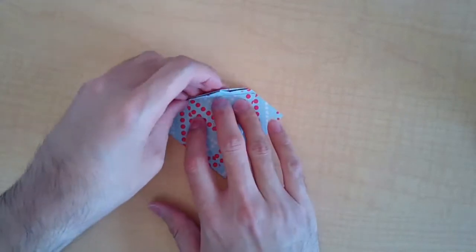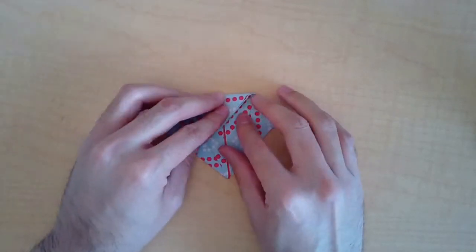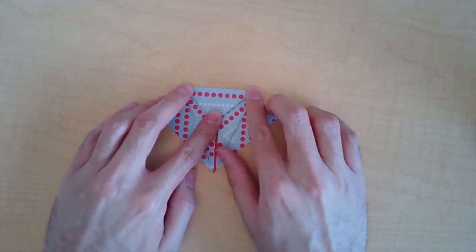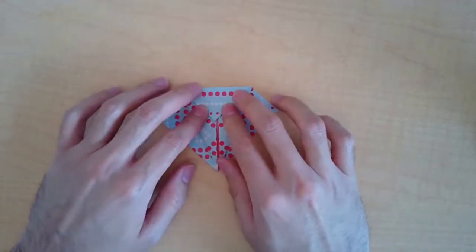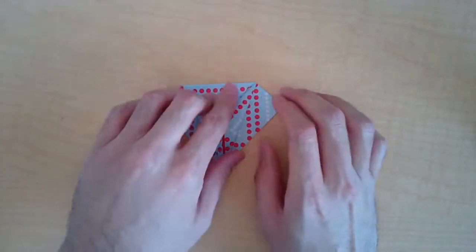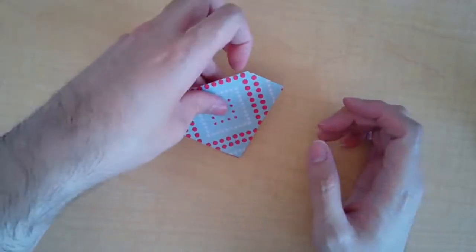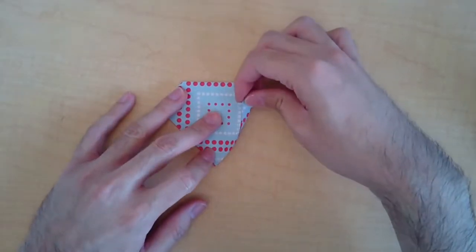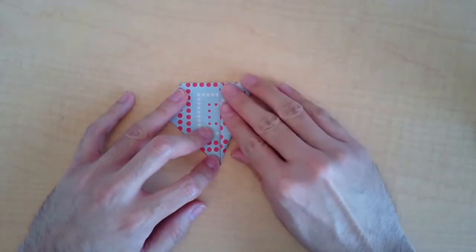All right, so you're going to flip it over and we're going to repeat the same steps as last time. Fold it down to the center, crease it on the other side.